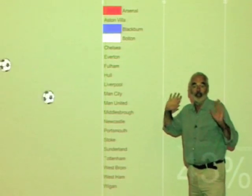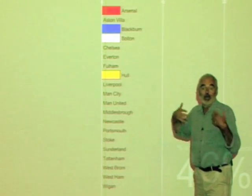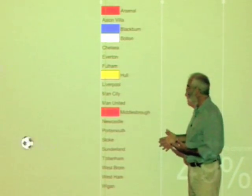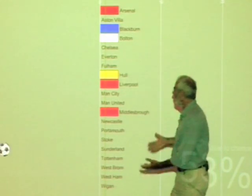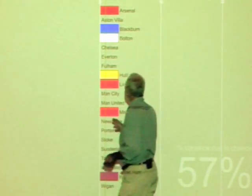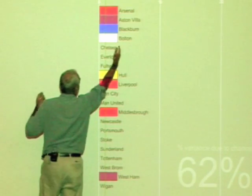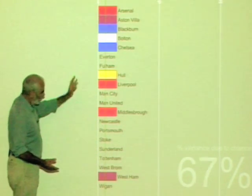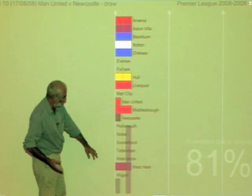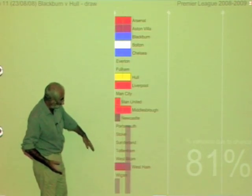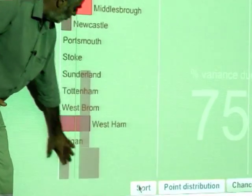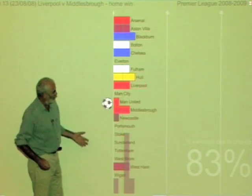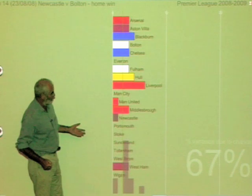If your team wins the game they get three points and if it's a draw they get one point each. As the season developed, each team accumulates a certain number of points, and if we look at the distribution we can draw a distribution showing the scatter — the distribution of points that each team has got.